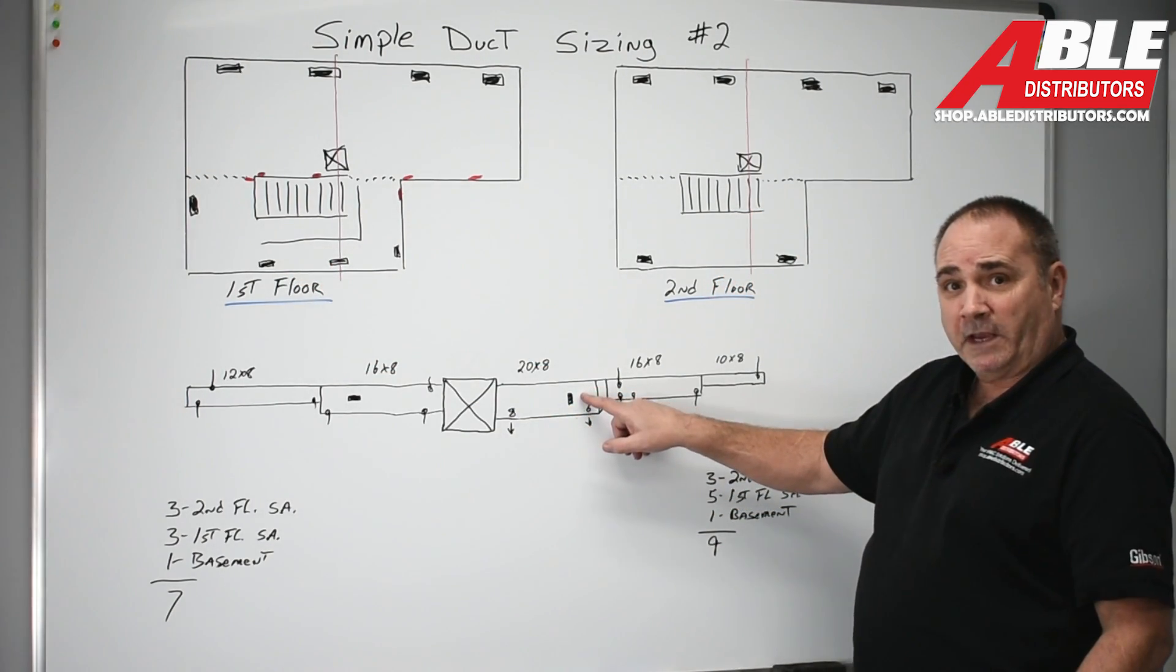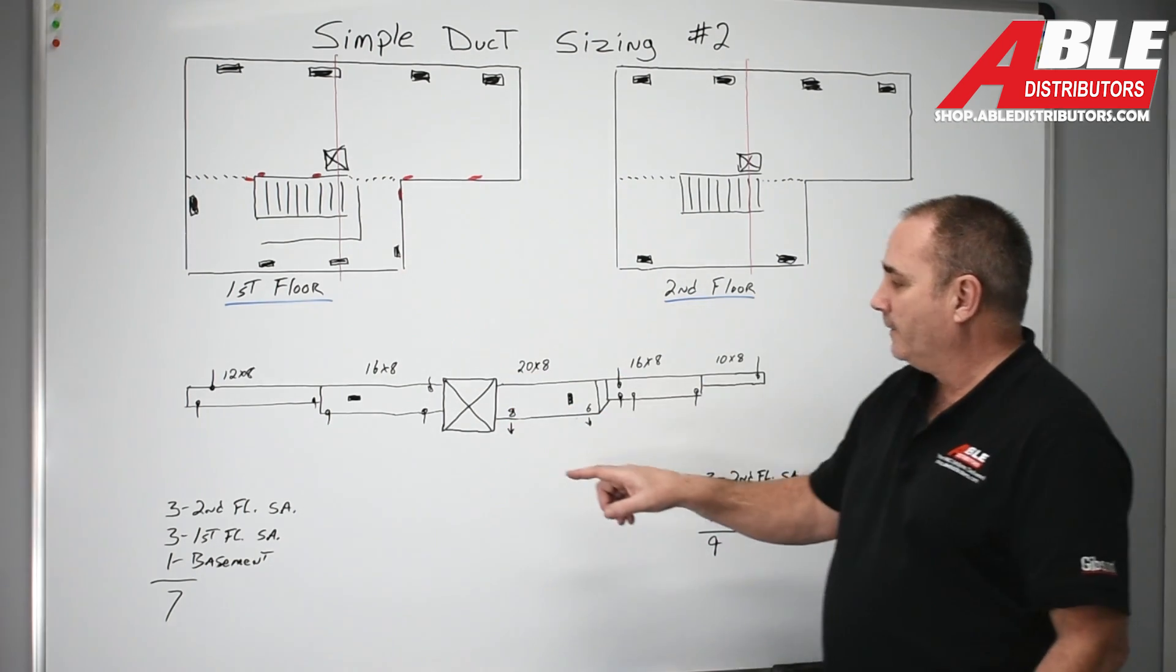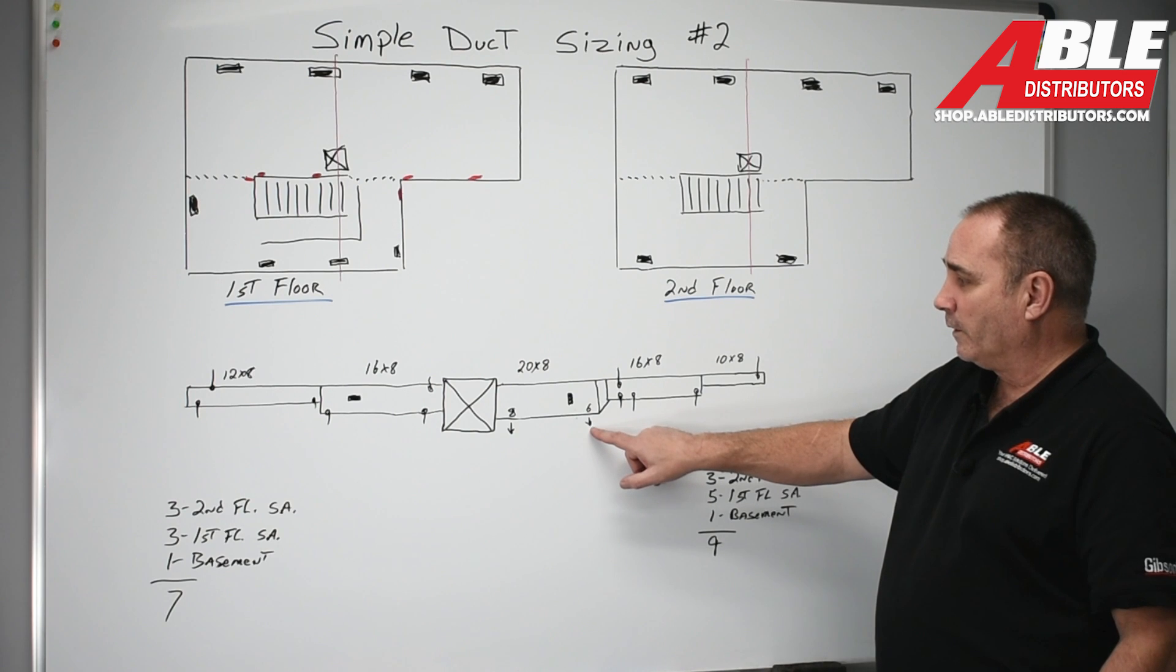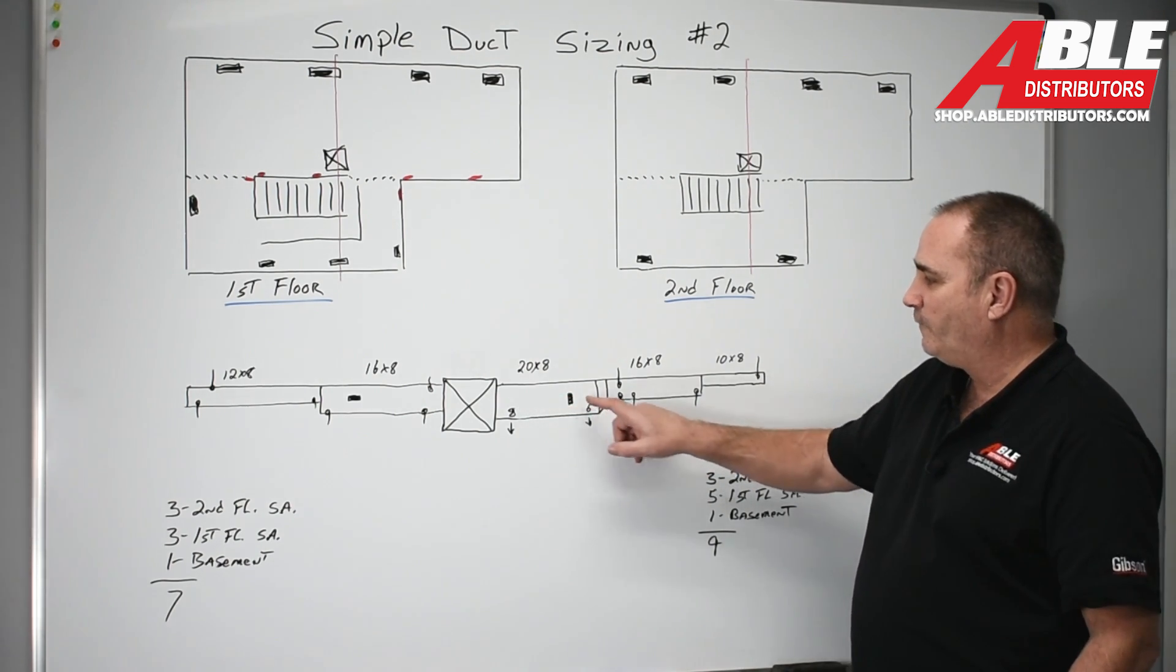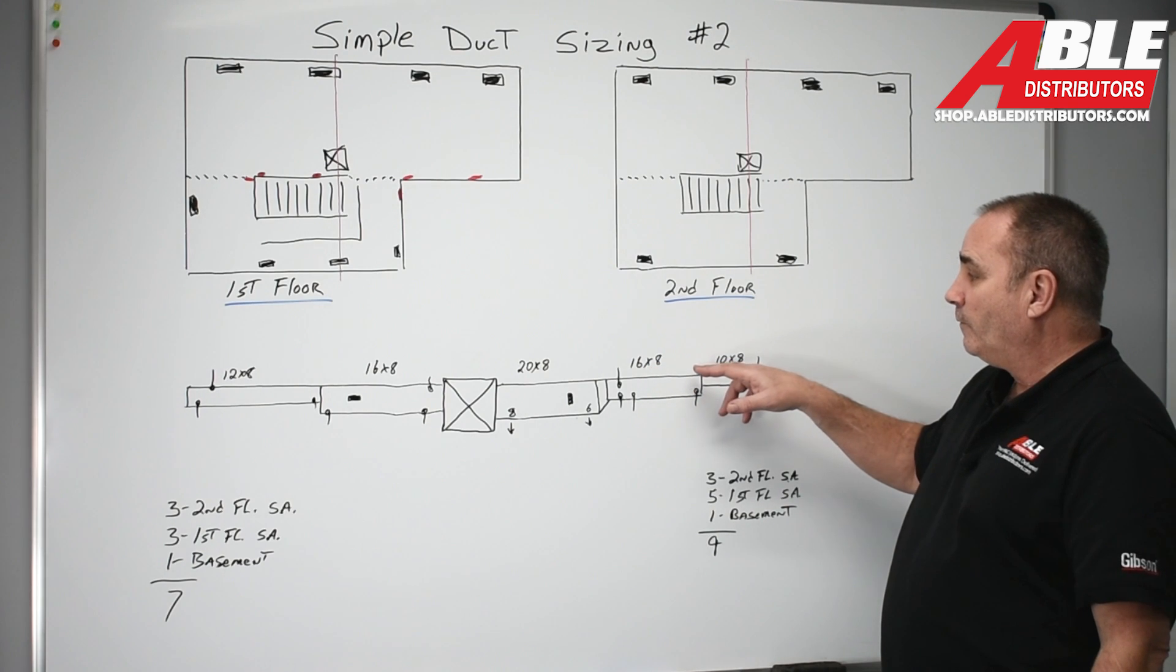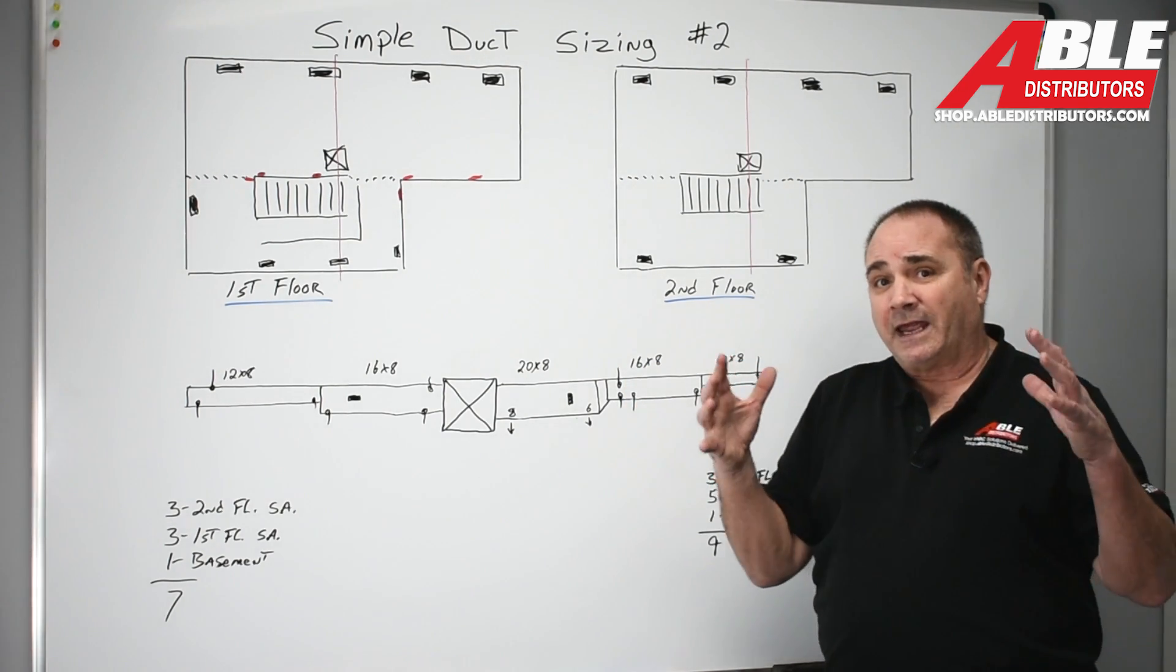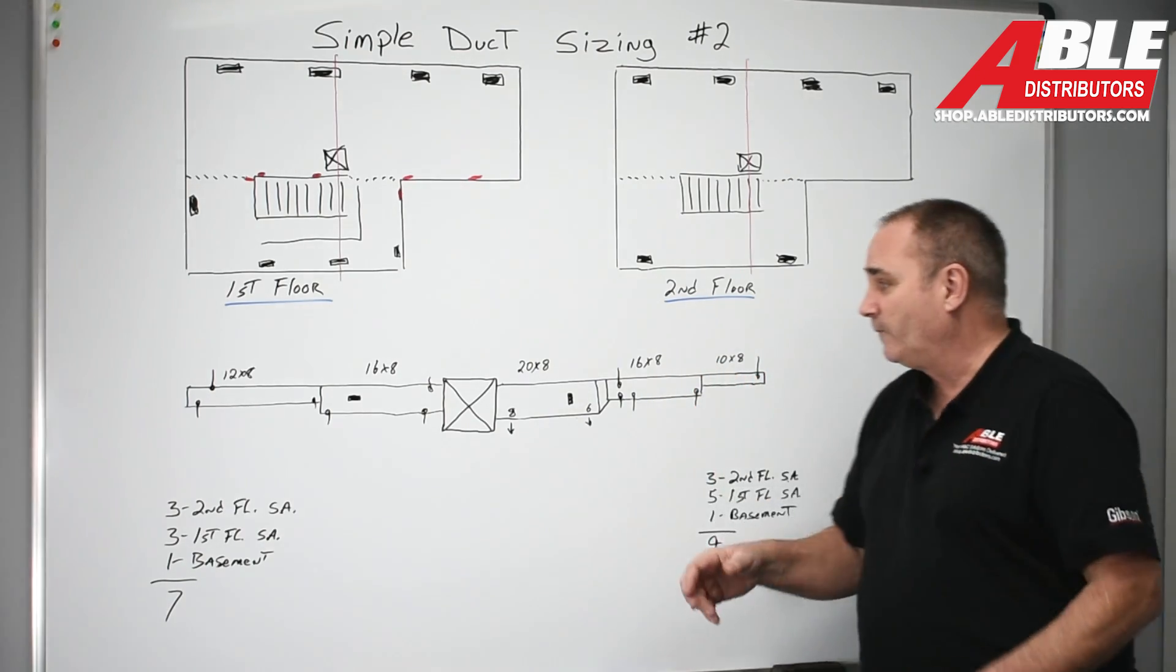I'm going to cut one in for the basement that's three and then I'm going to pick up this supply on the first floor that's four. So I've got one, two, three, four - four off of that. Now we reduce to 16 by 8 because again I've got four more so that duct has to be capable of 440 CFM.